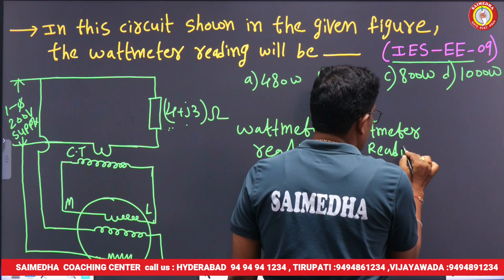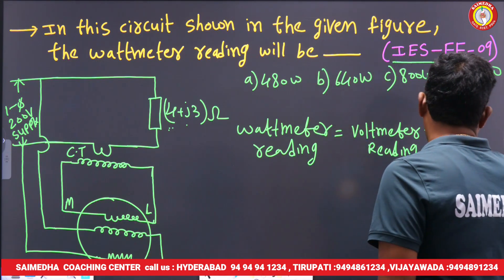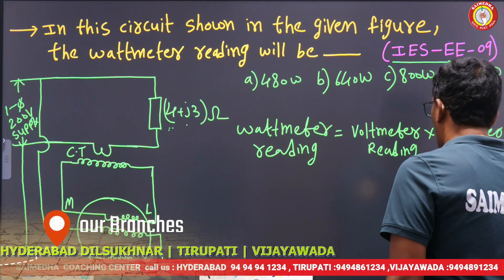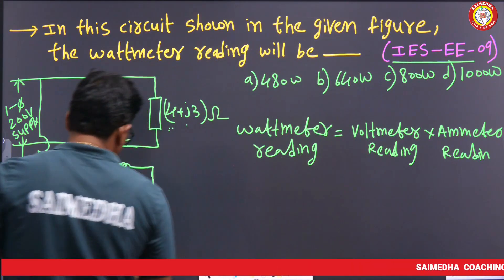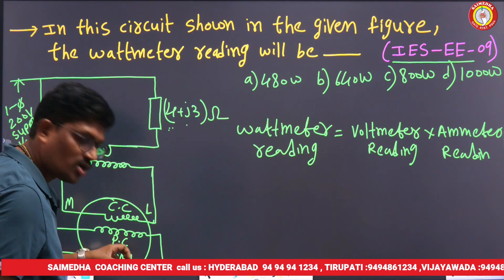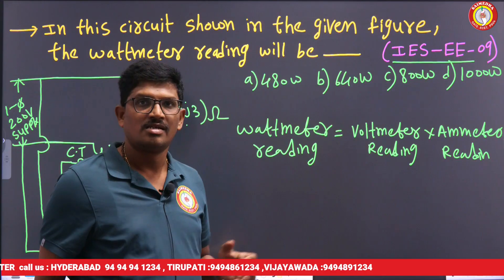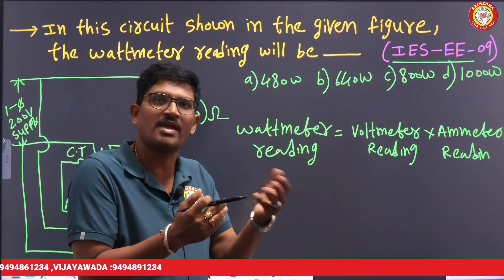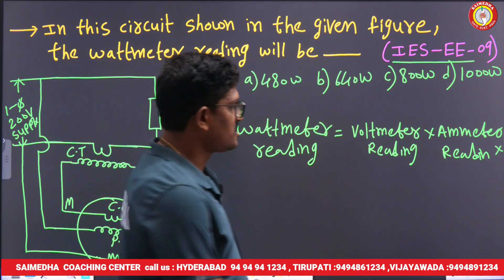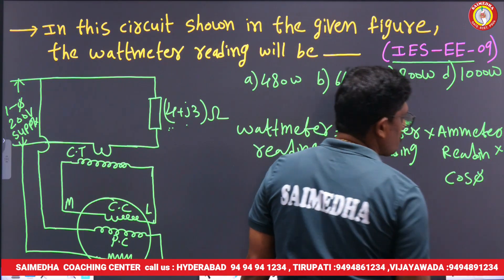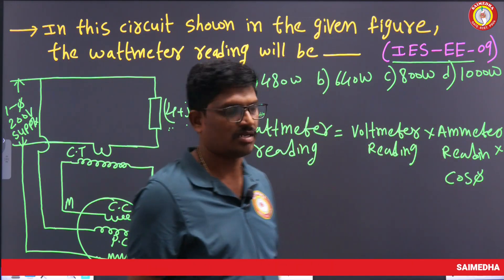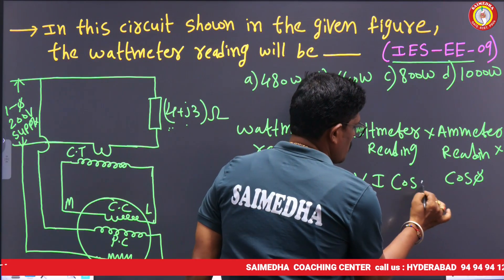The voltmeter acts as the potential coil in this wattmeter and the ammeter acts as the current coil. The potential coil measures voltage and the current coil measures current. The multiplication of the ammeter reading and the voltmeter reading, along with the power factor, gives the watt measurement: V·I·cosφ.